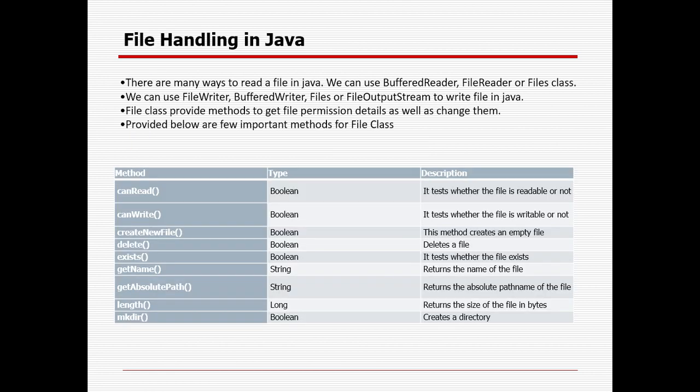First, we'll cover what a file means in Java. Whenever you want to create an Excel file, text file, Word document, or PDF, you first need to create a folder. Then you can create your own file, write some content on it, update it, read it, or make it read-only. Java provides all the important methods to handle files. There are many ways to read a file in Java — we can use BufferedReader, FileReader, or File class.